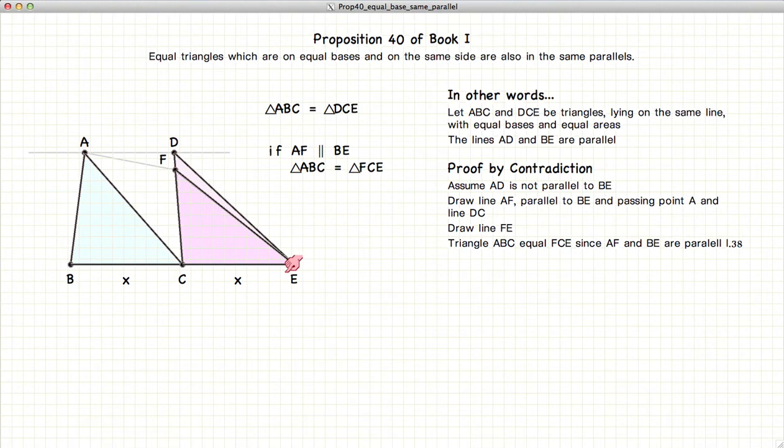According to Proposition 38, if AF is parallel to BE, then FCE will be equal in area to ABC.